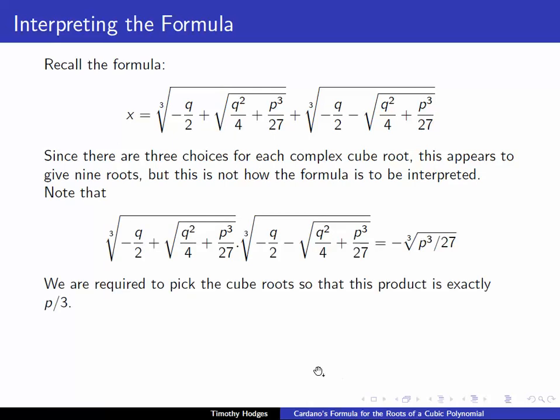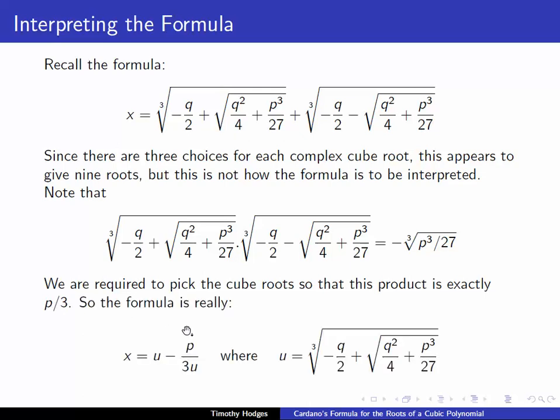Note that when we multiply these two cube roots together, we get minus the cube root of p cubed over 27. So, the formula actually requires us to pick the cube root so that this product is minus p over 3, not one of the other cube roots of minus cube root of p cubed over 27. The formula is really x equals u minus p over 3u, where u is this first cube root.